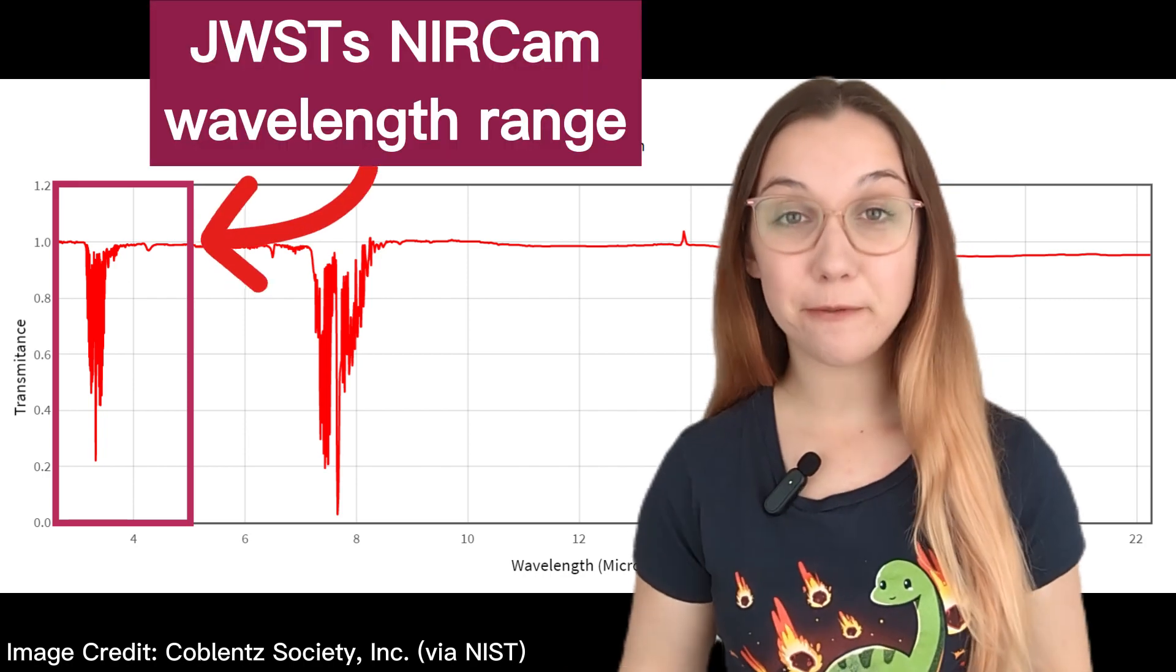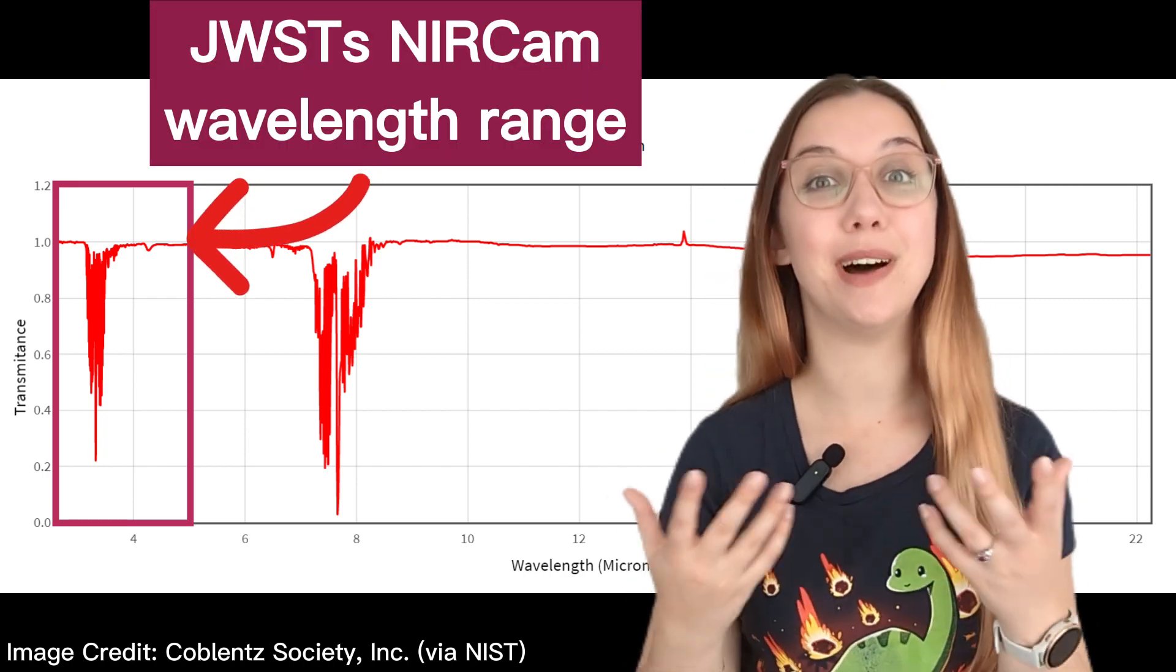And since JWST sees in infrared light, the light that gets absorbed by much of Neptune's atmosphere, it appears dark to JWST.